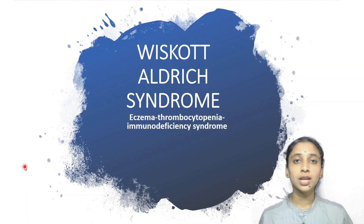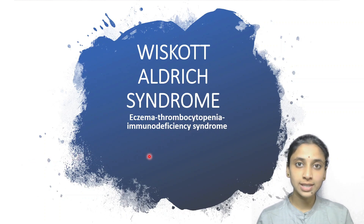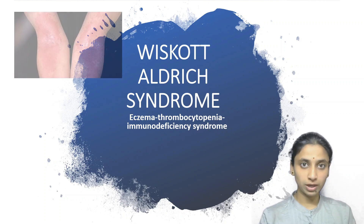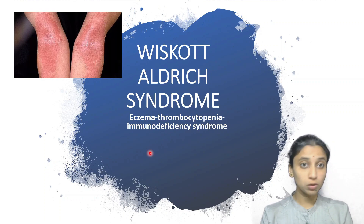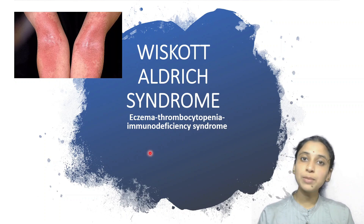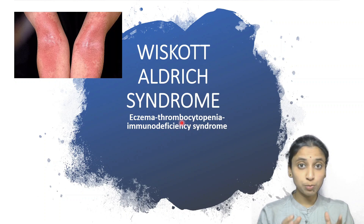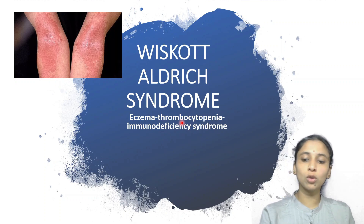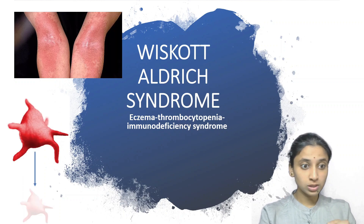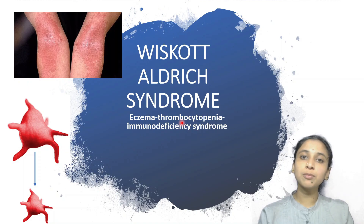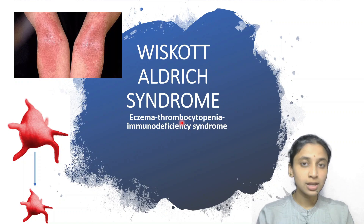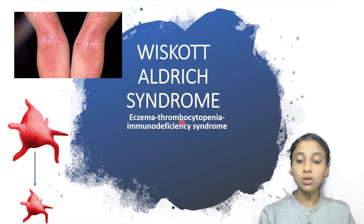Let's understand the terminology. It is also called eczema thrombocytopenia immunodeficiency syndrome. Eczema means atopic dermatitis, wherein the person will have dryness and redness of the skin, as seen in this picture. Thrombocytopenia refers to a decrease in the number of platelets. The special feature in Wiskott-Aldrich syndrome is micro-thrombocytopenia — not just the number but also the size of the platelets will be reduced. Immunodeficiency implies the person will be prone to develop several recurrent infections.